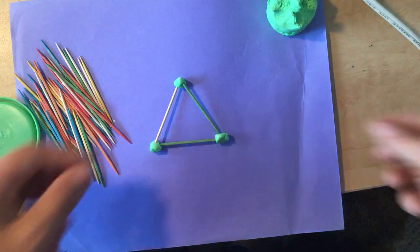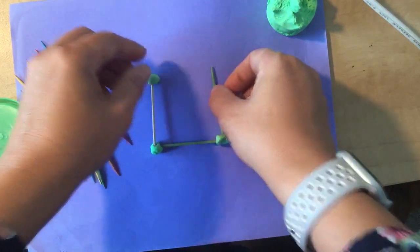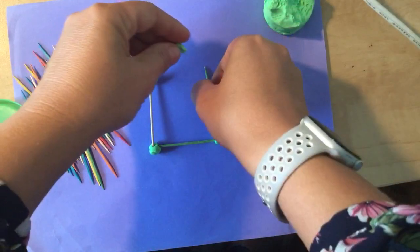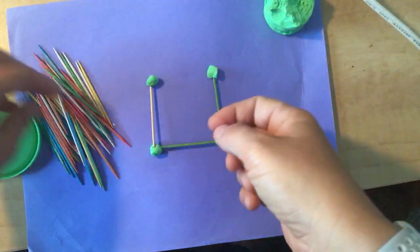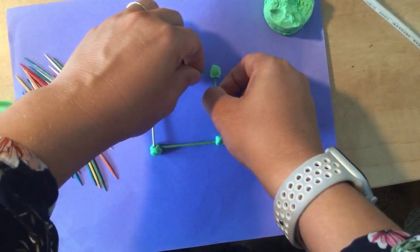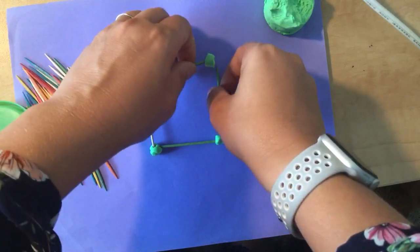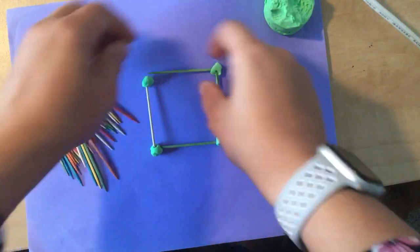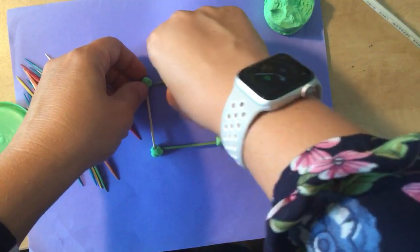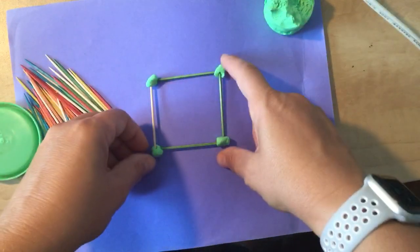Okay, so next we're going to make a square. How's that? Pretty cool, huh? All right, so there's a square.